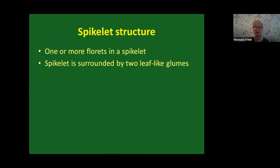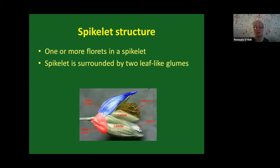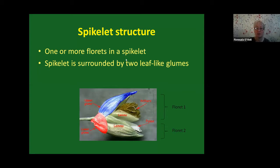To recap spikelet structure: one or more florets in a spikelet, surrounded by two leaf-like glumes. In this example there are two florets, each with a lemma, palea, and floral parts — the male anthers and pistil. These are the key characters you'll be working with when using a key. The spikelet consists of your upper and lower glume, and within those, the individual florets.